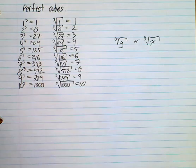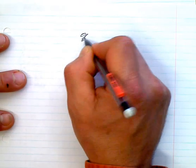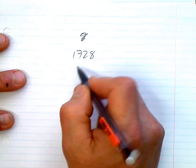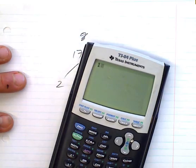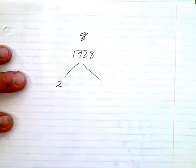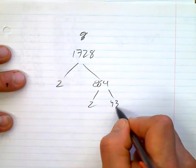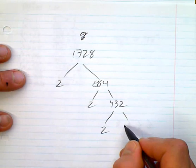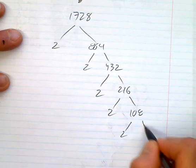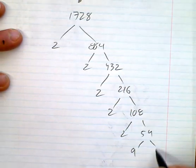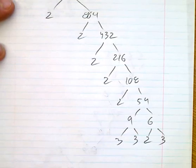We could also find the cube root of 1728. Let's break this down into its prime factors: 1728 divided by 2 gives 864, then 432, then 216, then 108, then 54, and then 9 times 6, giving us 3 times 3 times 2 times 3. So we broke it all the way down.